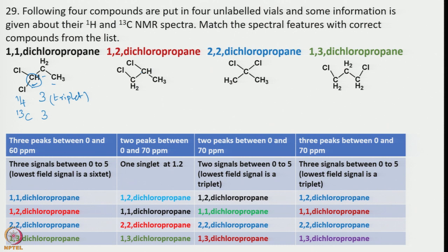Now we shall move on to the second one, 1,2-dichloropropane. Again, 3 signals are there in both 1H and 13C NMR. The lowest field signal is coupled equally with two neighboring protons. As a result, it would show 6 lines.